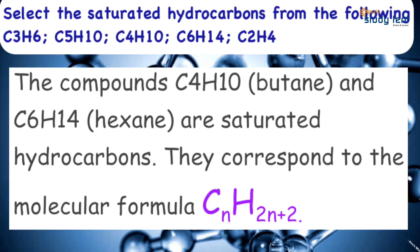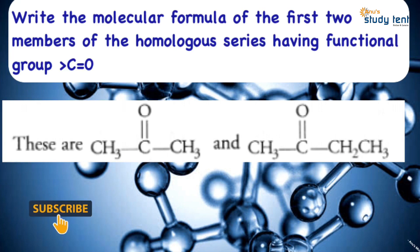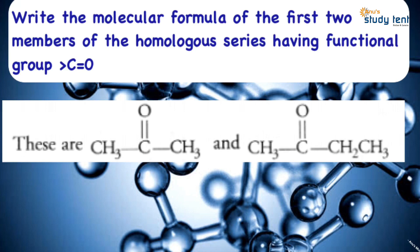Examples of saturated hydrocarbons include C4H10 (butane) and C6H14 (hexane). Next question: write the molecular formula of the first two members of the homologous series having the ketone functional group (C=O). Ketones require at least one methyl group on each side. The first member has 3 carbon atoms: CH3-C(=O)-CH3. The second member has 4 carbon atoms: CH3-C(=O)-CH2-CH3.